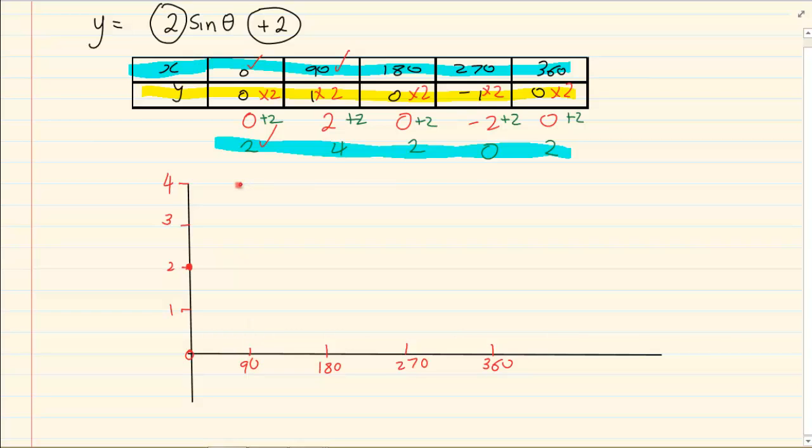So x is 90, y is 4. Then we have 180 and 2, so x is 180, y is 2. Then we have 270 and 0. Then we have 360 and 2. And then it is a matter of joining the dots.